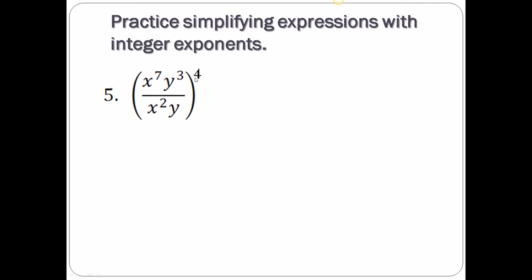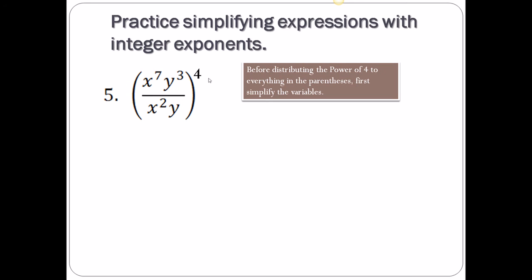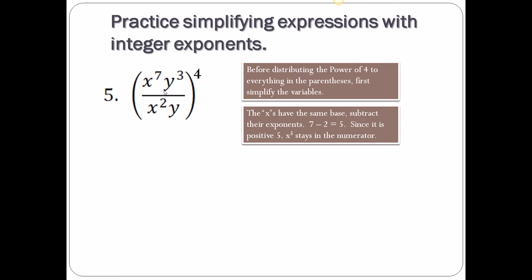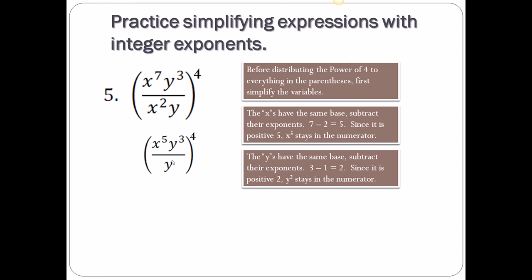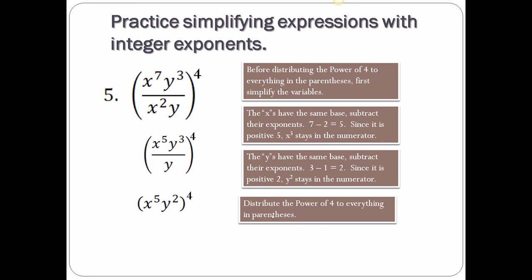Next problem: a fraction inside parentheses with an exponent of 4 outside. First clean up inside the parentheses. The x's — same base, subtract: 7 take away 2 is 5, positive, so x⁵ stays in the numerator. The y's: 3 take away 1 is 2, positive, so y² stays in the numerator. Now distribute the power of 4: multiply exponents — 4 times 5 gives x²⁰, 4 times 2 gives y⁸. Final answer: x²⁰y⁸.